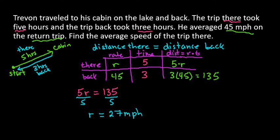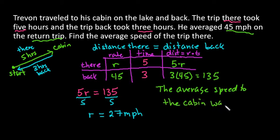So it's always important to answer with a sentence. So we would say the average speed there or the average speed to the cabin was 27 miles per hour.